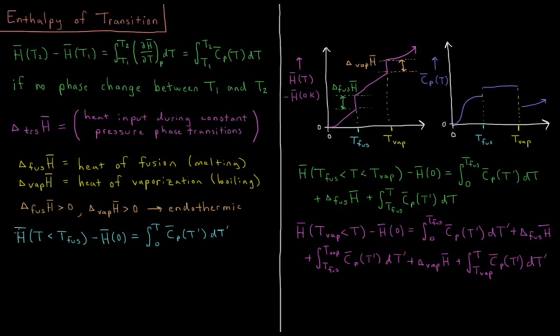So for the enthalpy change of something which is a solid, where we're below the temperature of fusion, so we're below the melting point at this given atmospheric pressure, H(T < T_fuse) - H-bar(0) is equal to the integral from zero to that temperature of the constant pressure molar heat capacity integrated over T.